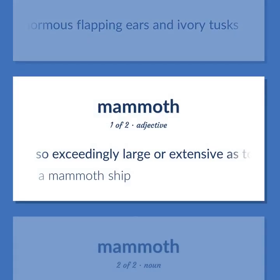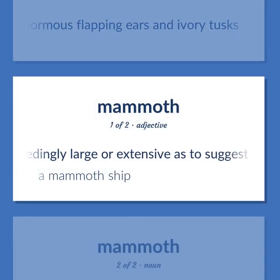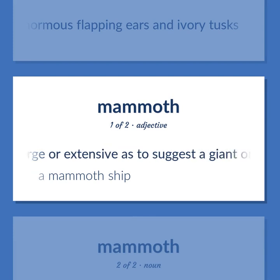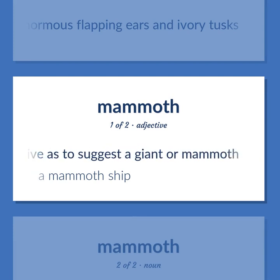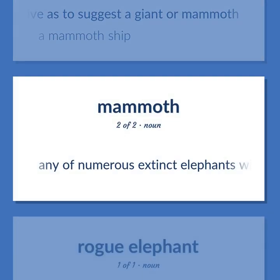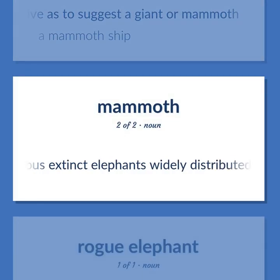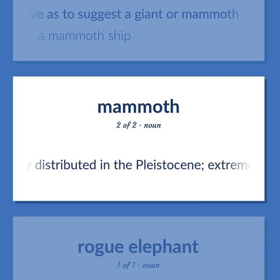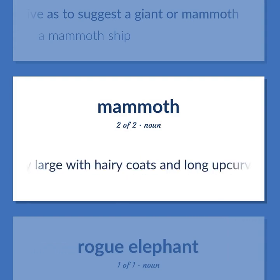So exceedingly large or extensive as to suggest a giant or mammoth. A mammoth ship. Any of numerous extinct elephants widely distributed in the Pleistocene — extremely large, with hairy coats and long up-curved tusks.